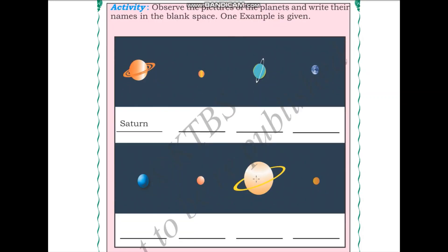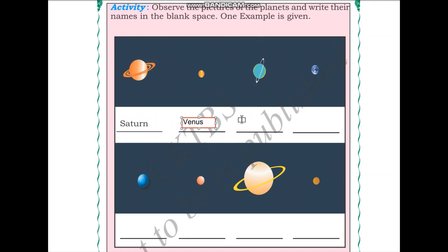You have to closely observe the planets and write which planet they are. Let us start with the second one. This planet looks very bright in color, and we have learned that Venus is the bright planet, so this one is Venus. The third one is sea green or blue-green in color — that is why this planet is Uranus.